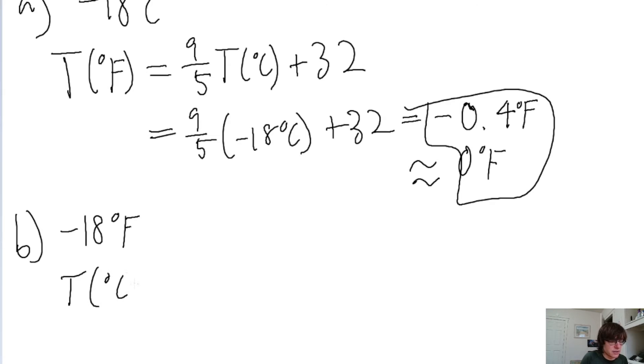And the thing to remember here is that a temperature in degrees Celsius is equal to 5 ninths multiplied by the temperature in degrees Fahrenheit. But now we are subtracting 32, but it's within parentheses.